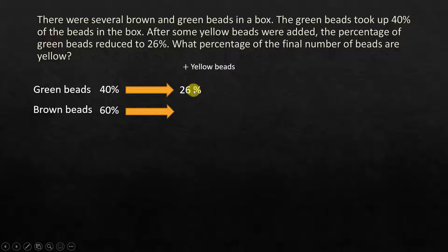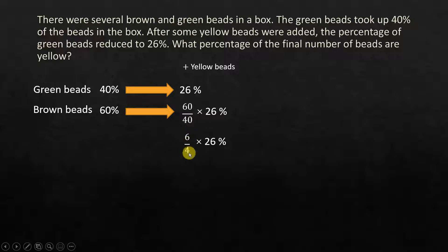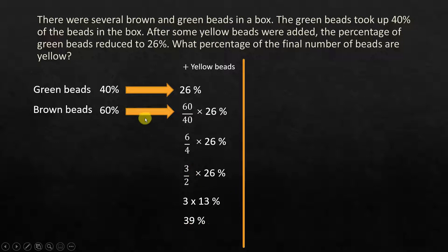Brown beads is 60%, and we want to find out what happens to the brown beads after yellow is added. 40% became 26%, so 60% would become 60 over 40 times 26. That's the shortcut. 60 over 40 times 26 — on simplification this becomes 6 over 4 times 26, and again simplifying to 3 over 2 times 26. So that is 3 times 13 equals 39%. So 40% became 26%; if that is the rule, then 60% would become 60 divided by 40 times 26, which gives you the answer.